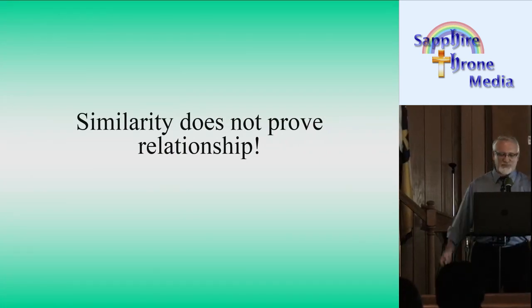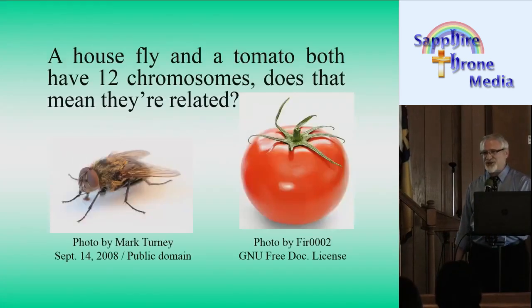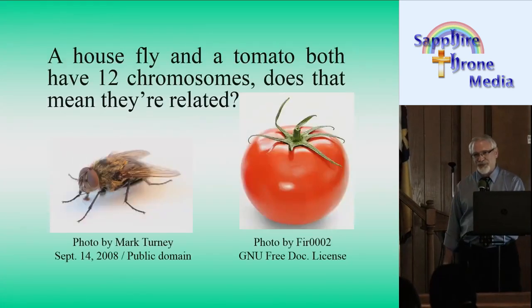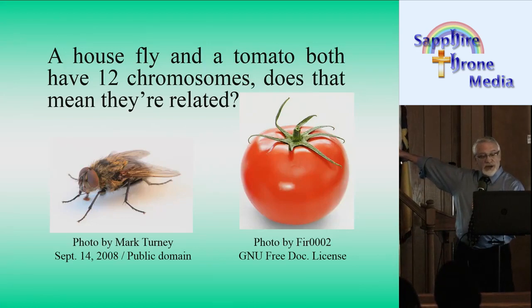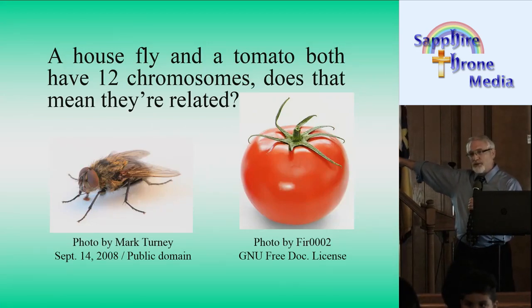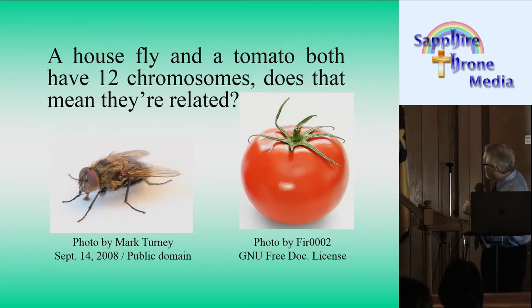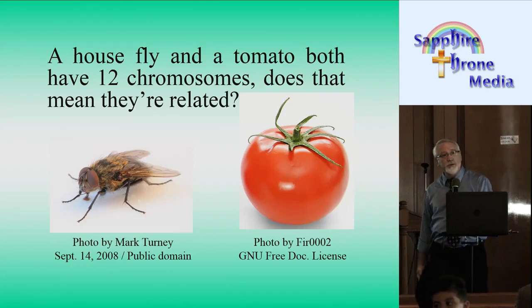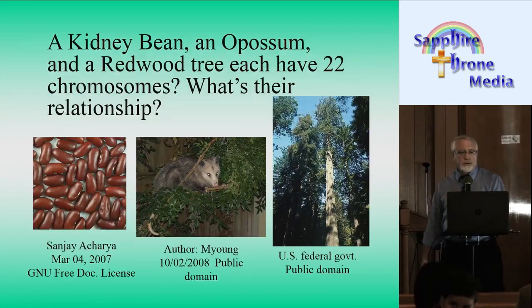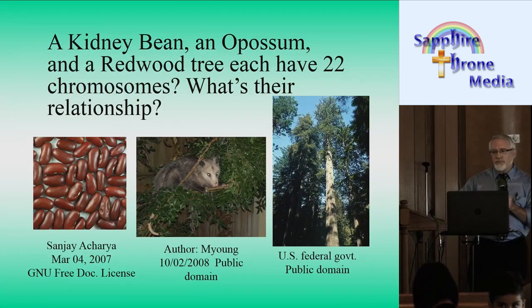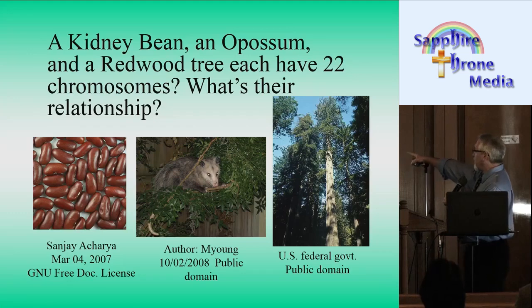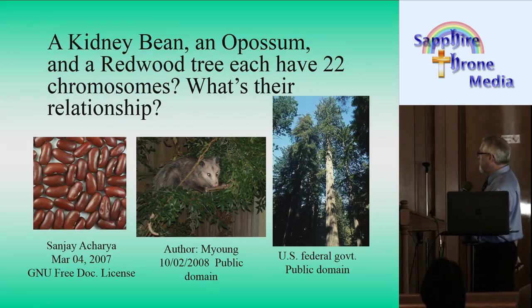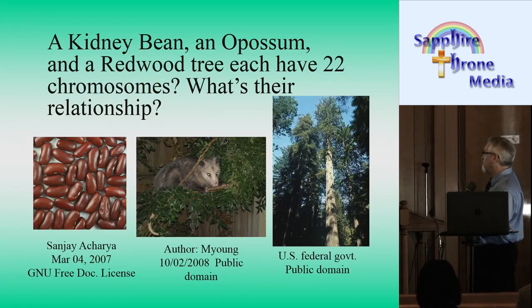The fly and the tomato have the same number of chromosomes: 12. They're not related. The kidney bean, the opossum, and the redwood tree all have 22 chromosomes — no relation there either.